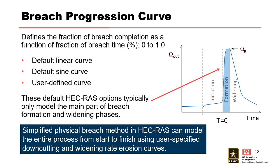The breach progression curve is used by HEC-RAS during the breach formation time to adjust the growth rate of the breach. By default, the breach progression is assumed to be linear between the breach initiation and the full breach size or full formation time, but a sine wave or user-defined curve can also be selected. These default HEC-RAS options typically only model the main part of formation and widening phases, capturing the main surge of the breach formation in hydrograph, which typically lasts no more than several hours. The duration on either end of the main surge can be minutes to hours to days. The simplified physical breach method in HEC-RAS can be used to define the entire breach process from start to finish, with down-cutting and widening erosion rates as a function of velocity user-specified. This method is used for modeling levee breaches.